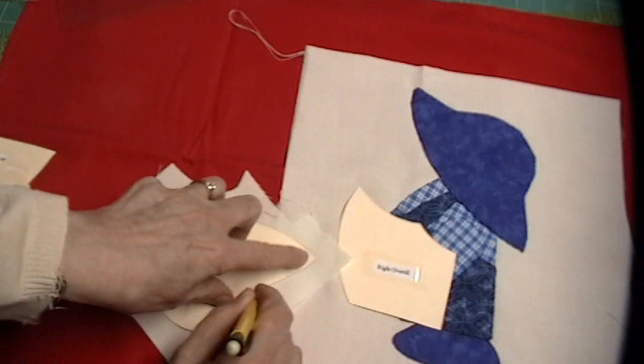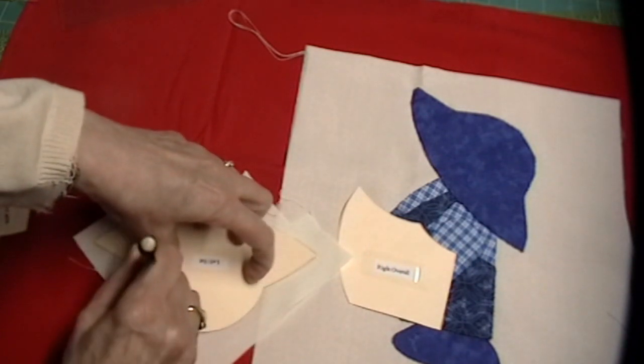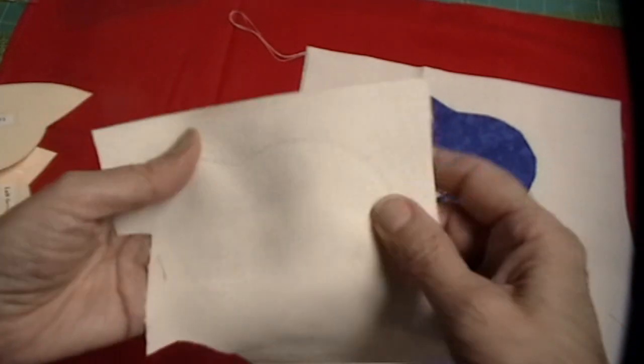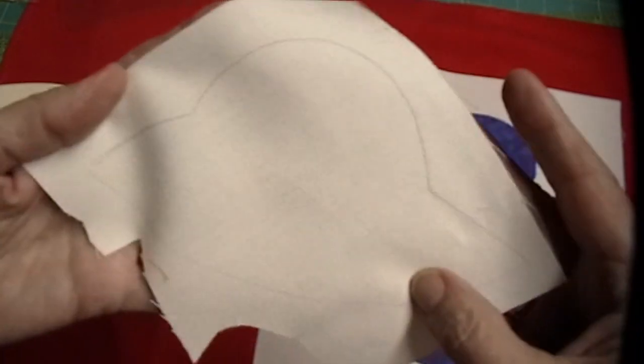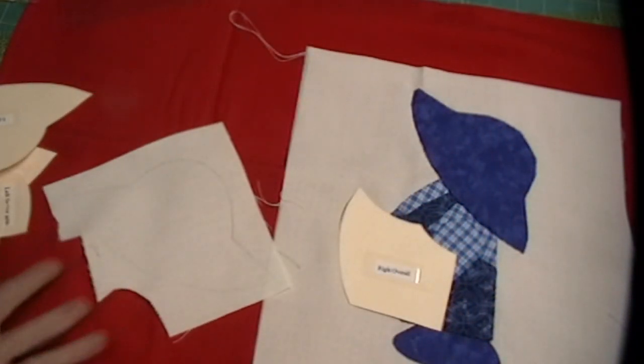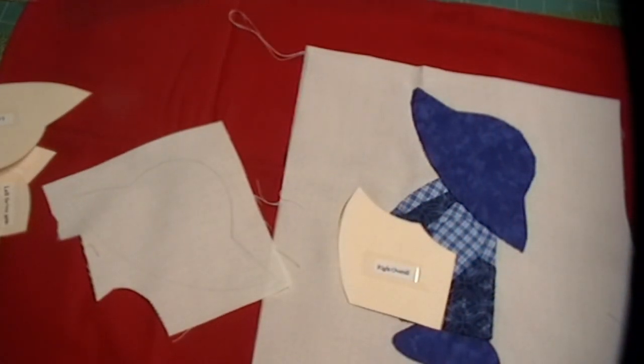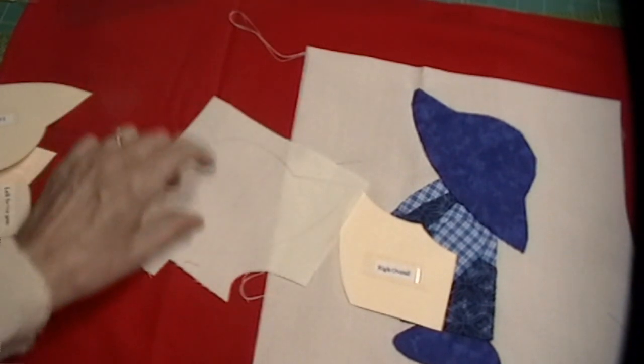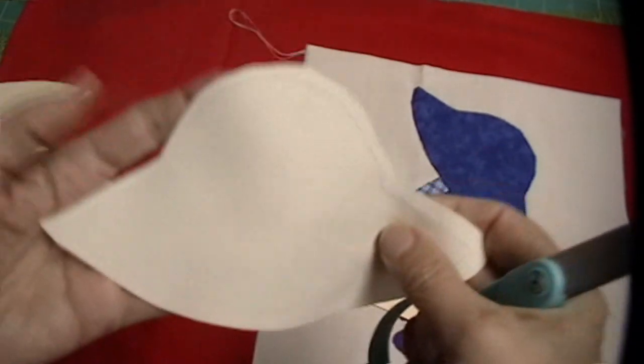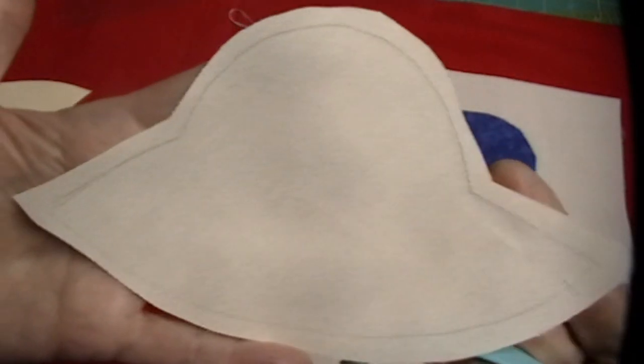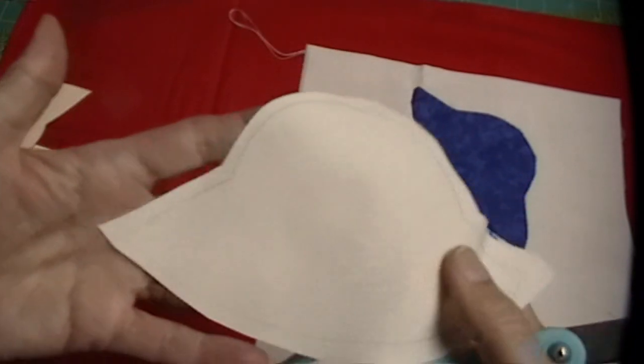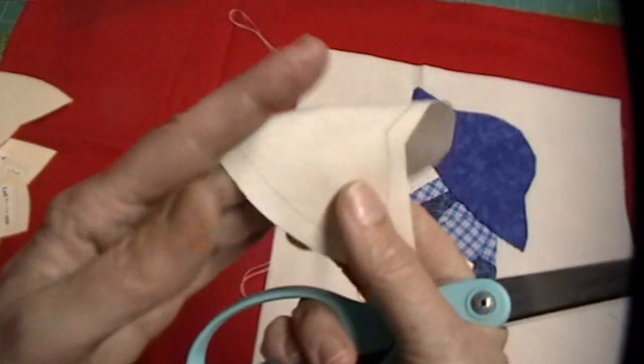You can buy the templates, and you can trace around them on the fabric of your choice. Now, there you have the outline. You need to turn this to the inside. So, the next thing that you would do would be to take some scissors and trim around your outline one-fourth of an inch away from the line. I have taken and I've trimmed one-fourth of an inch around the pattern that I have drawn on the cloth.